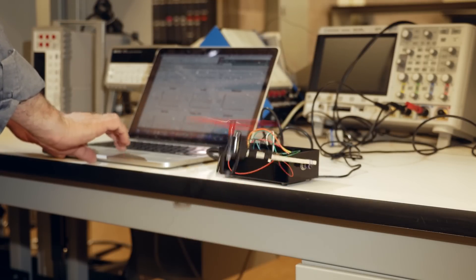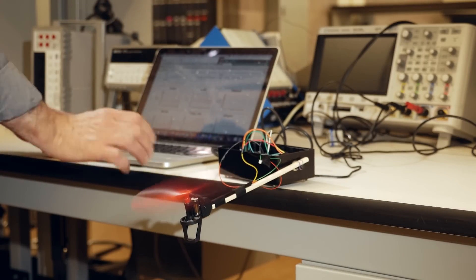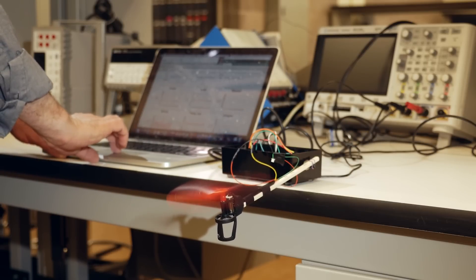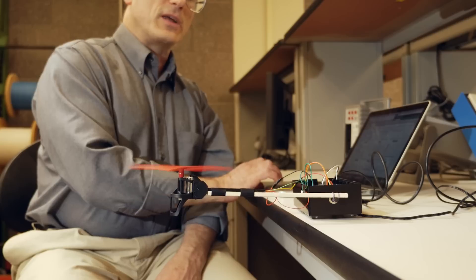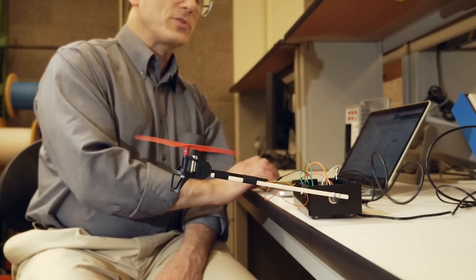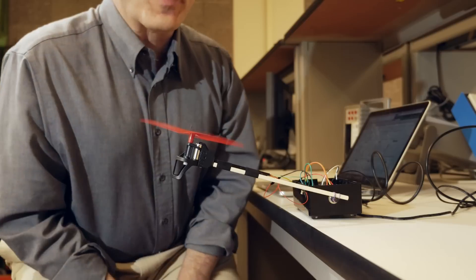But we can stop it from oscillating by adding what's called derivative, or delta feedback, which I've turned on now. And then once we have delta feedback on, we can have complete control of the arm. We can move it up. We can move it down. It will hold that position. And when we blow on it, it will come right back.